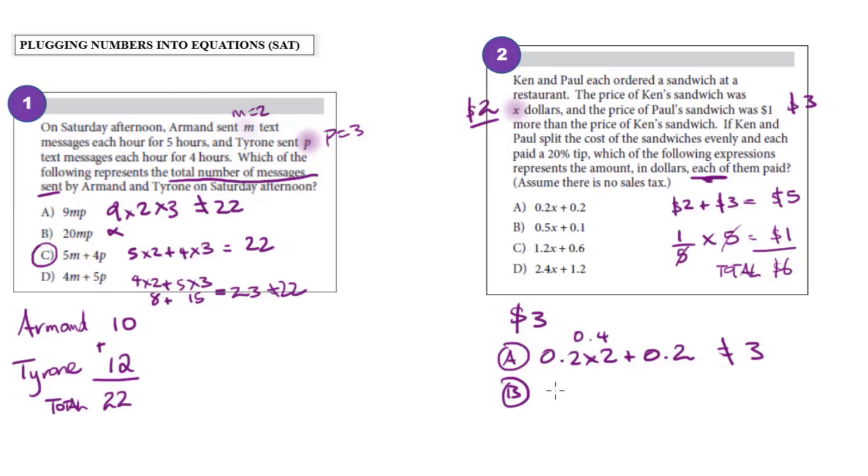In B, I have 0.5 times x, so that's 0.5 times two plus 0.1. 0.5 times two is the same thing as half times two, so that's one. And one plus 0.1 would not give me three either.